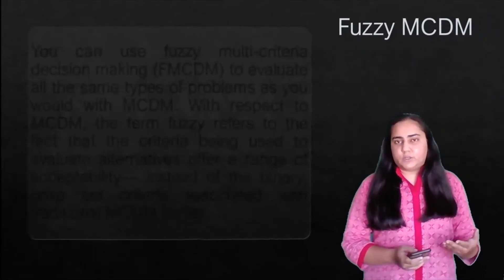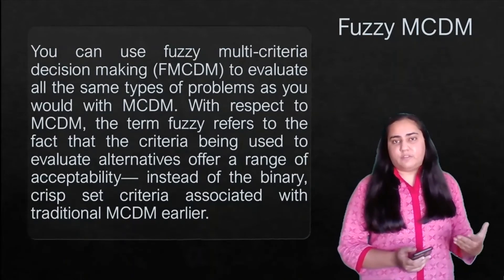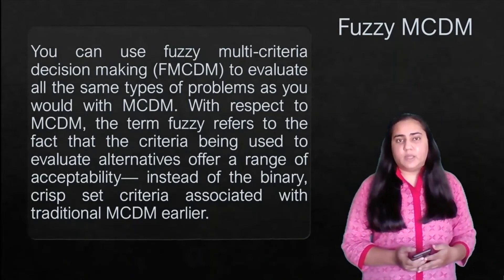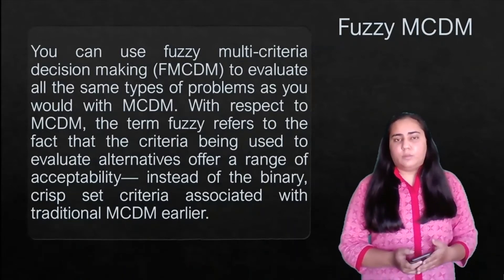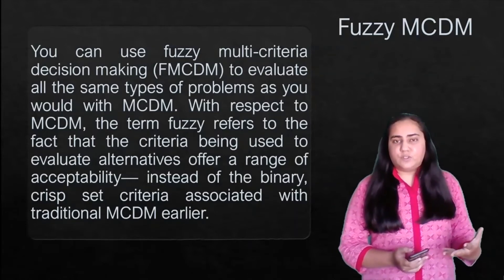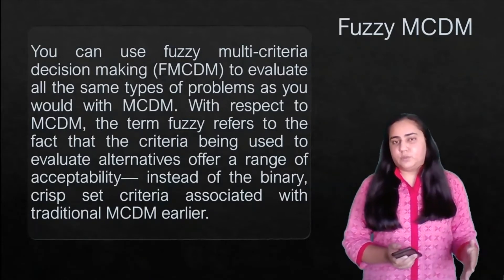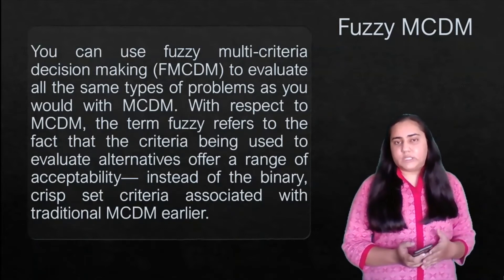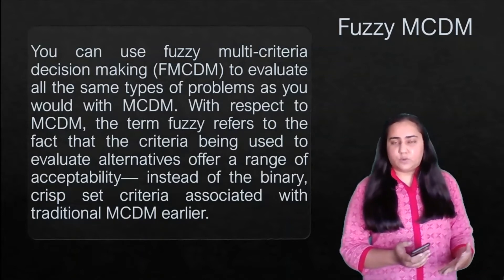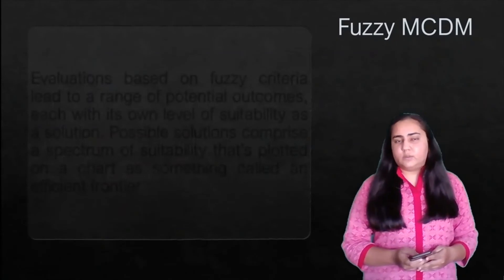There is a variant of MCDM known as fuzzy MCDM, denoted FMCDM. It evaluates the same types of problems but the difference is that the criteria offer a range of acceptability instead of just binary crisp set criteria. You can assign a score between zero and one, not just zero or one.